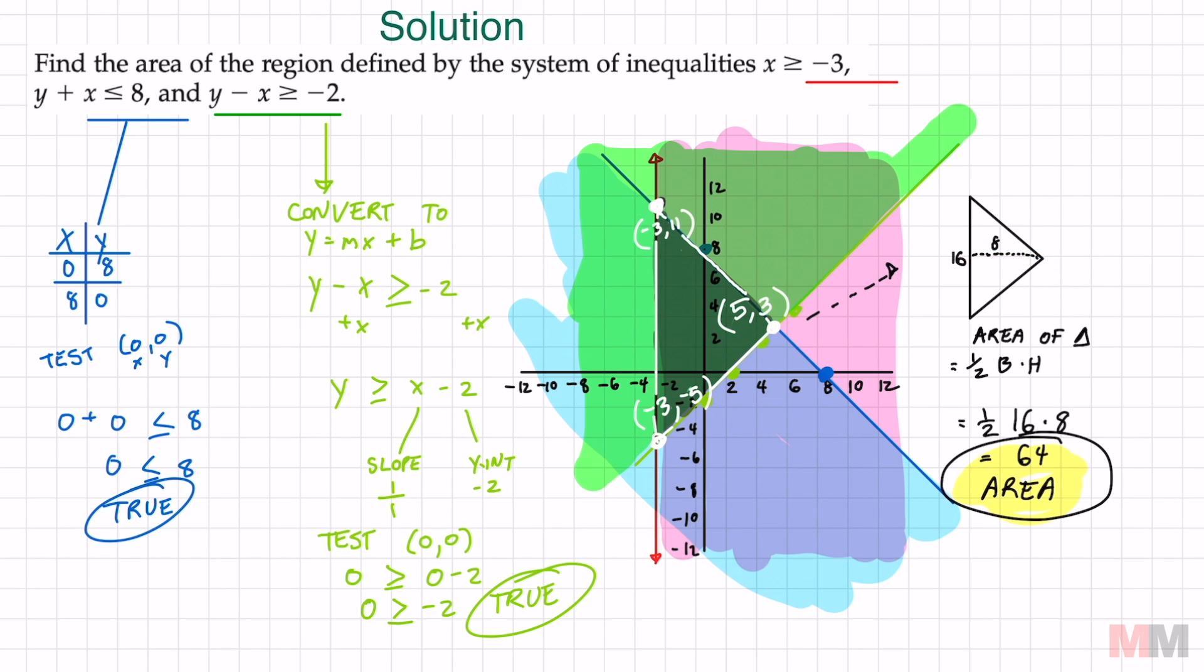And now I have the dimensions of that triangle. The area for a triangle is a half base times height and the base is 16 and 8. Plug those in and you got yourself your area.